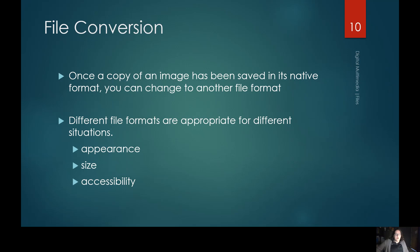File conversions: once a copy of an image has been saved in its native format, you can change it to another file format — you can convert it so it can be used in different ways. Different file formats are appropriate for different situations; they can affect appearance, size, and accessibility. For example, if you're editing a photo in Photoshop as a PSD, you cannot take that file to Walgreens and have it printed — you have to change it to a JPEG or TIFF. A JPEG is a condensed, smaller file, while a TIFF allows you to save more information into it for very large design files.